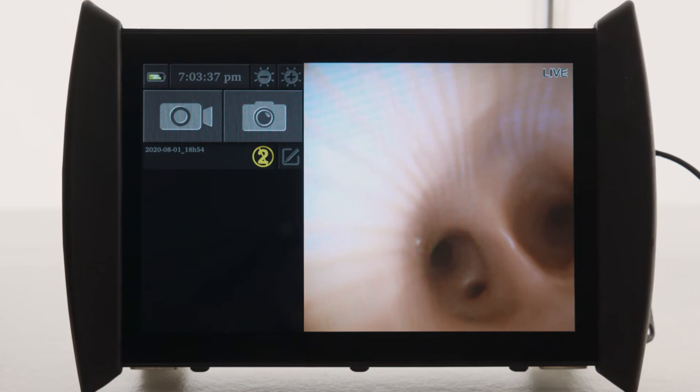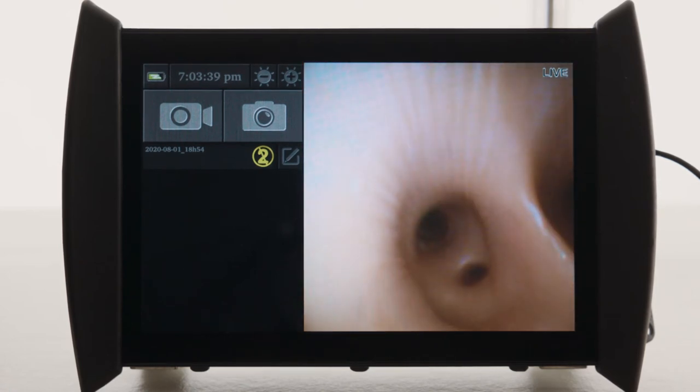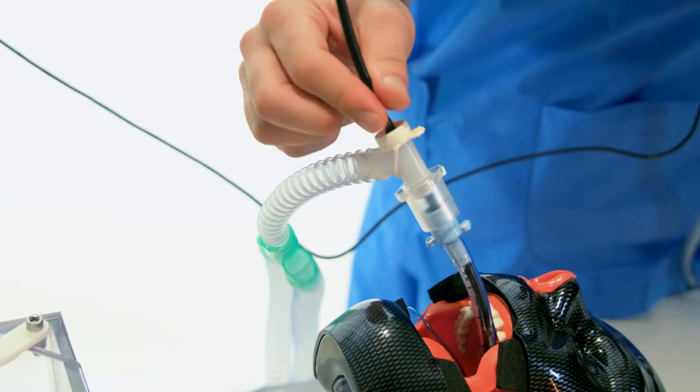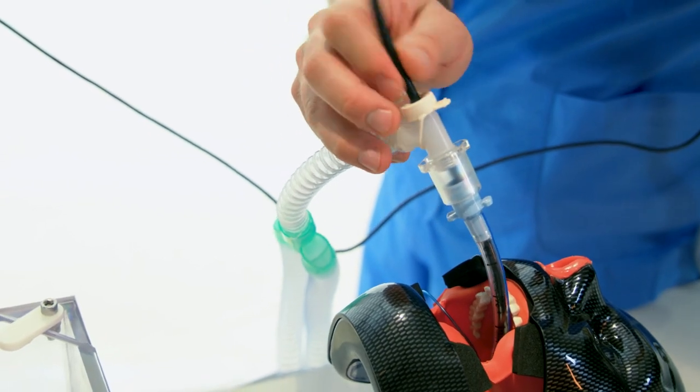During insertion, the insertion tube must remain straight to avoid kinking and ensure that the movements of the wrist are transmitted to the distal tip.